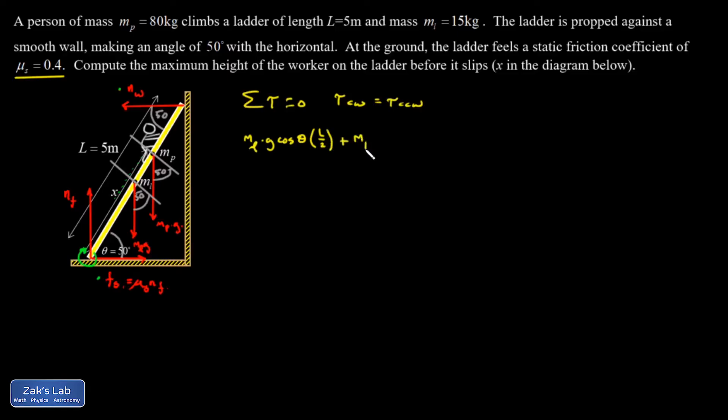Then I have the mass of the person times G cosine of the angle exerted through a lever arm of X. And that's the prize here. We're trying to find X. That's going to be the height the person is at when the friction force is maxed out.